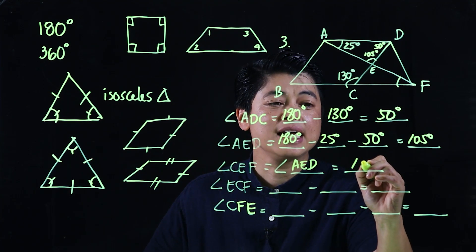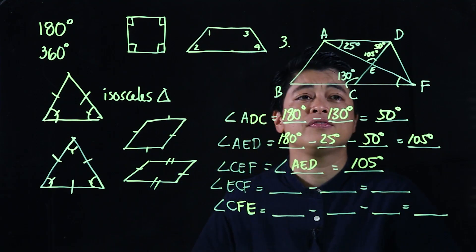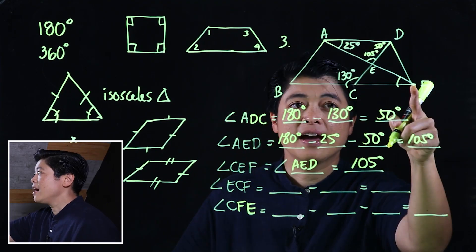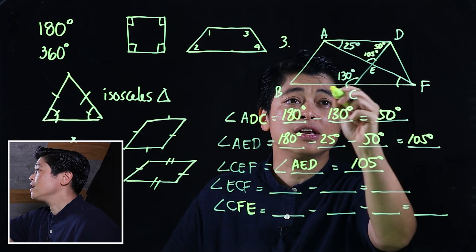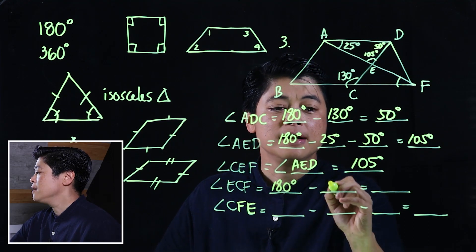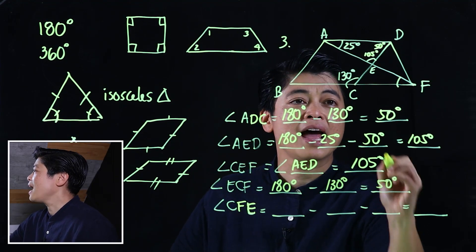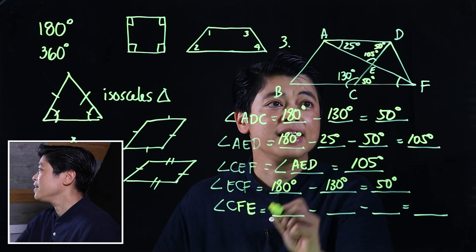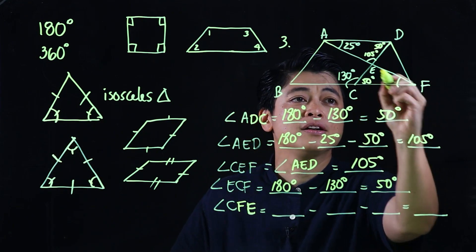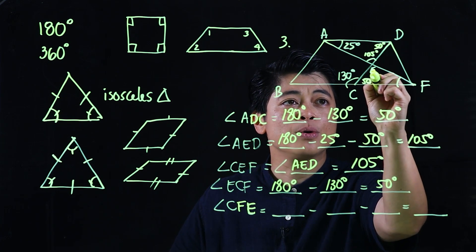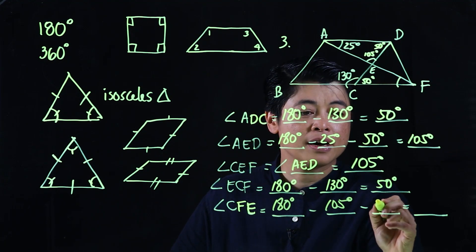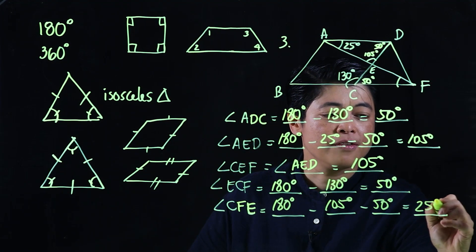For angle ECF, we're looking at a straight line, so that's 180 degrees minus 130 degrees, making that angle 50 degrees. Finally, for angle CFE, we're looking at the triangle where we already know the angles are 50 degrees and 105 degrees, so that's 180 minus 105 minus 50, which equals 25 degrees.